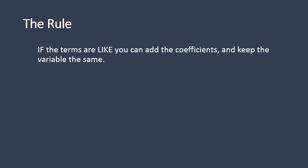So here's the rule: if the terms are like, you can add the coefficients and keep the variables the same. Here's an example. If I have 5x squared plus 7x squared, my variable is exactly the same — x squared. So I can just add the numbers, the coefficients. 5 plus 7 is 12. So 5x squared plus 7x squared is 12x squared. That's how many x squareds I have. If you have terms that are exactly alike, add the coefficients and leave the variable exactly how it is. Just like adding apples to apples.